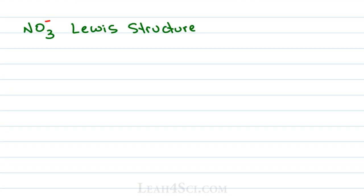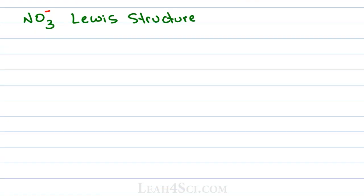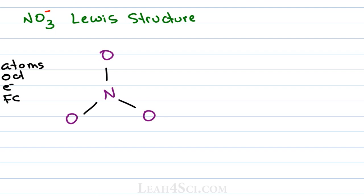In the OrgoBasics series linked below, we looked at how to draw the Lewis structure for molecules and ions. So let's take a look at the NO3 minus Lewis structure. Starting with the skeleton, we have nitrogen single bound to three oxygen atoms. Let's work on the octet, electrons, and formal charge quickly. Again you can see the step by step in the Lewis structure video.